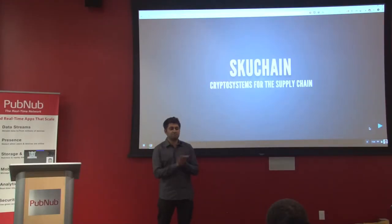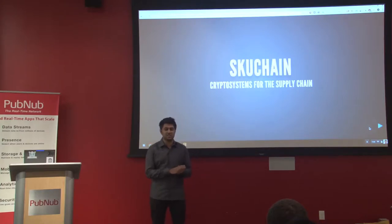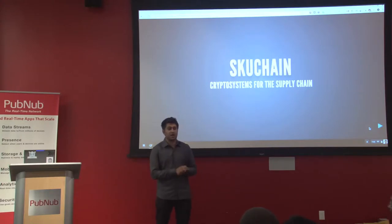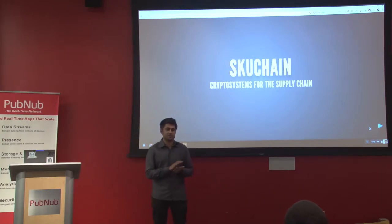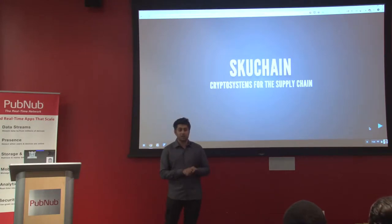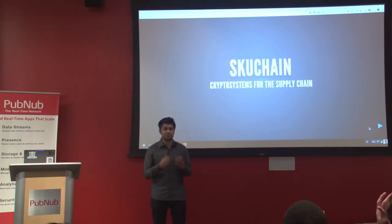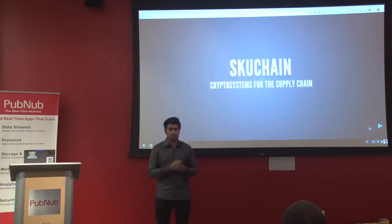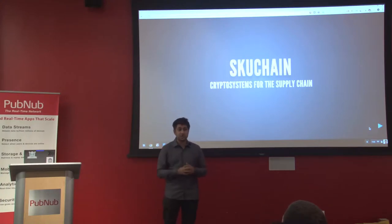This is probably the first talk we've done here where people are talking about something that has nothing to do with money. What I've been looking at and working on for about the last four months is using the cryptographic primitives that make Bitcoin as a design pattern for something completely different, because I see a problem that Bitcoin is a really good conceptual framework and engineering diagram for solving — and that problem is in the supply chain.